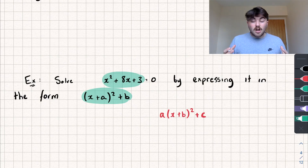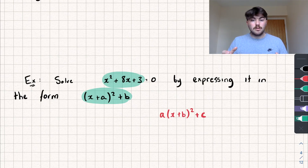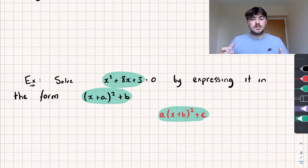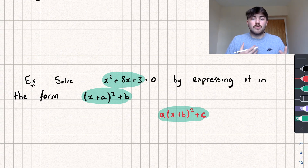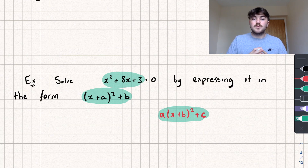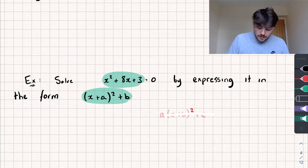If the coefficient of x squared is not equal to 1, when we complete the square it's going to take a slightly different form. So they're both completed square forms — they just vary depending on what quadratic we're dealing with. I've got examples of both in this video, so by the end it should all make sense.